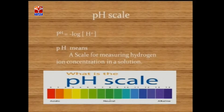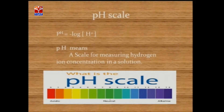Here you can observe the pH scale. On the pH scale, the value ranges from 0 to 14. The values 0 to 7 indicate acidic nature, the value 7 represents a neutral solution, and between 7 to 14 it indicates basic nature. We can determine the value of pH with the help of the pH formula: pH = −log[H⁺]. This is useful for determining the pH value of substances.